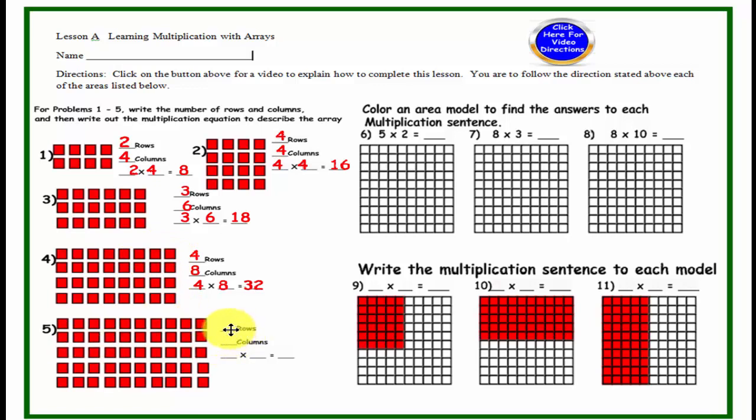Problem 5, we have 5 rows, 10 columns, and our sentence is 5 times 10 equals 50. So here is row 1, 2, 3, 4, 5, and we have 10 columns, trust me on that one.